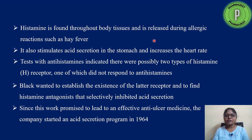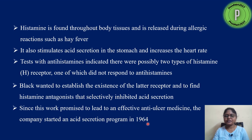Histamine, found throughout the body, is released during allergic reactions such as hay fever, and also stimulates acid secretion in the stomach and increases heart rate. Tests with anti-histamines indicated that there were two types of histamine receptors in the stomach — one responded to histamine, and another did not. They wanted to establish that they could inhibit the latter receptor using a molecule similar to histamine. Because this work promised an effective anti-ulcer medicine, the company started an acid secretion program in 1964.